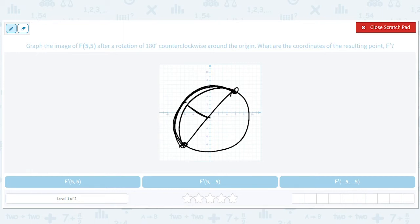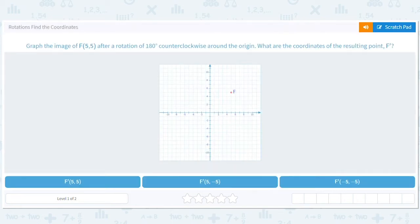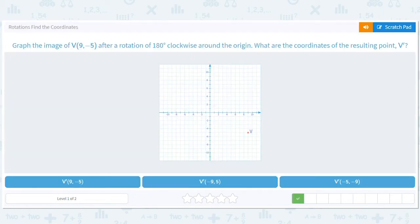But for now, this is an easier one. It's just all the way on the other side. So it's just negative 5, negative 5.